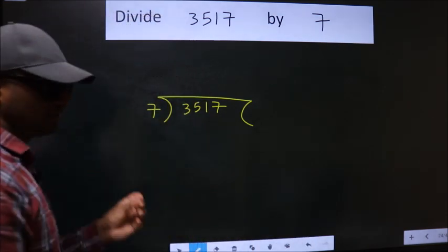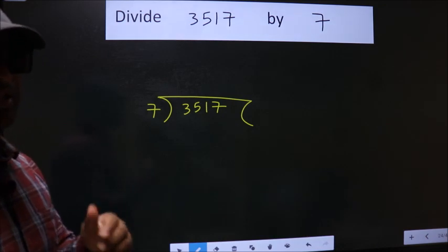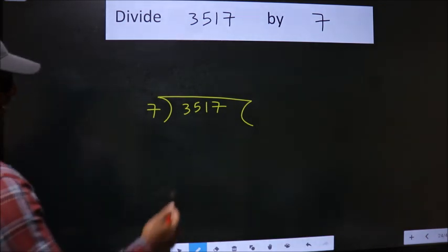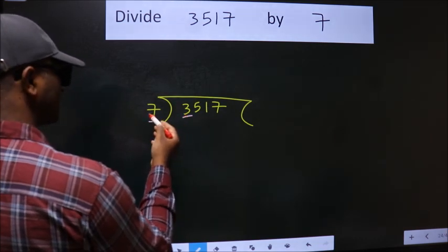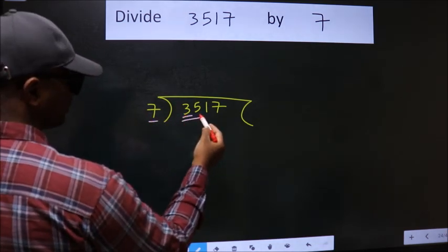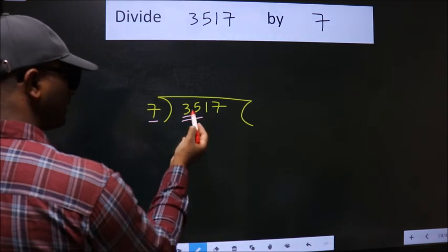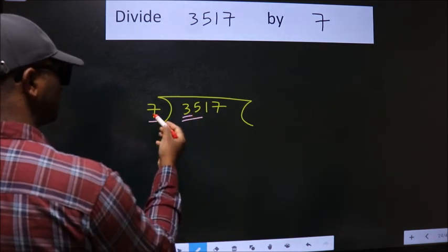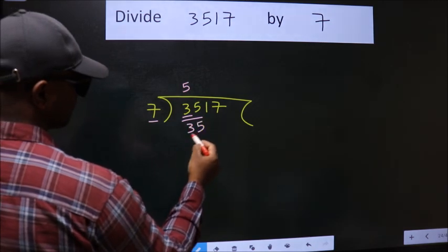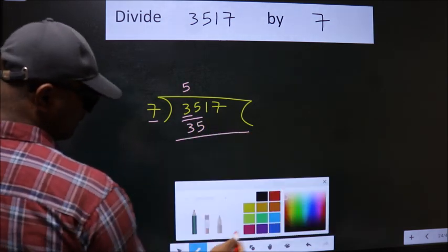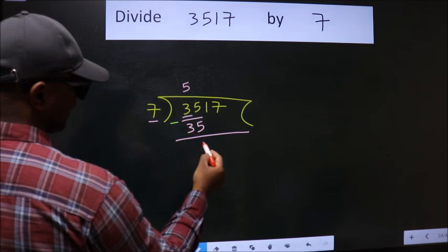This is step 1. Next, here we have 3, here 7. 3 is smaller than 7, so we should take 2 numbers: 35. When do we get 35 in the 7 table? 7 times 5 is 35. Now we subtract, we get 0.